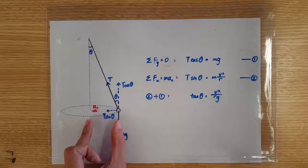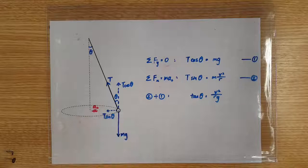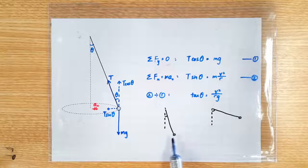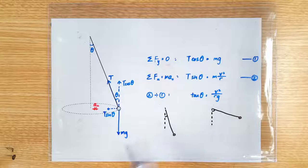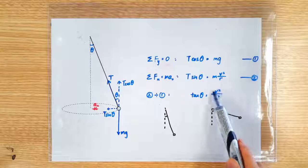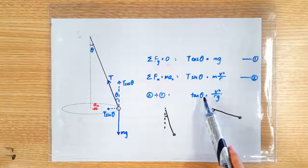r is of course the radius of the circular motion, this length here. So this formula here seems to suggest that if we increase the speed of a conical pendulum, then the angle θ is going to become larger. See, if v squared increases, θ should also increase.